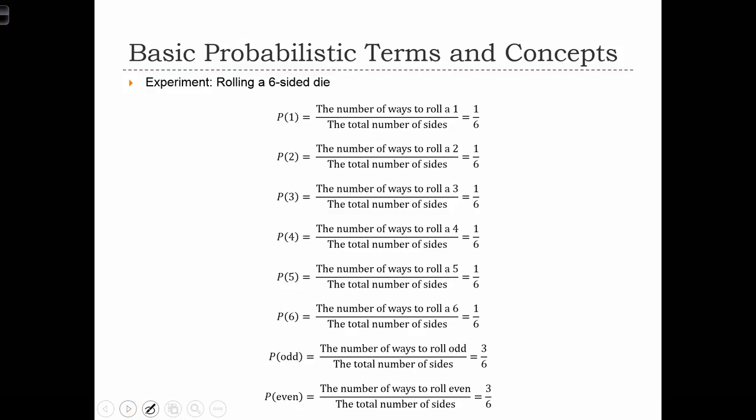Let's build the relative frequencies of the different outcomes of rolling a six-sided die. So in the first example, we want to know the probability of rolling a one. Well, if we roll a die, how many outcomes associated with that die roll satisfy the event of a one being rolled? I would argue that there's only one way that you can roll a die and receive a one. And therefore, we put a one on the numerator of this fraction.